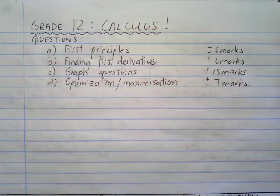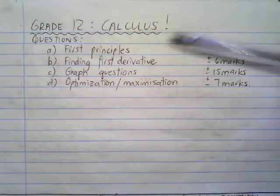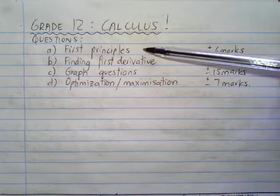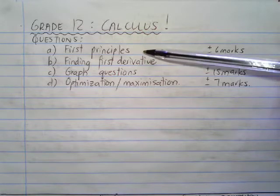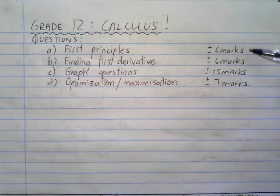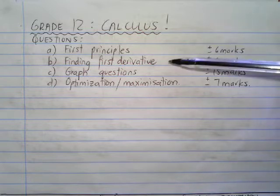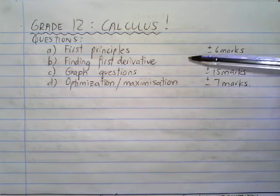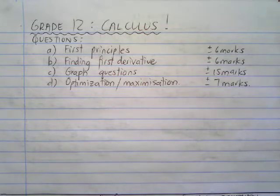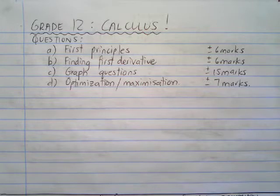Hey Grade 12s. In the previous two videos we discussed finding the first derivative using first principles, which you'll definitely get in an exam for about six marks. We then went on to finding the first derivative using the shortcut method, also about six marks, and now we are on question C, which is where we are going to work with graphs.